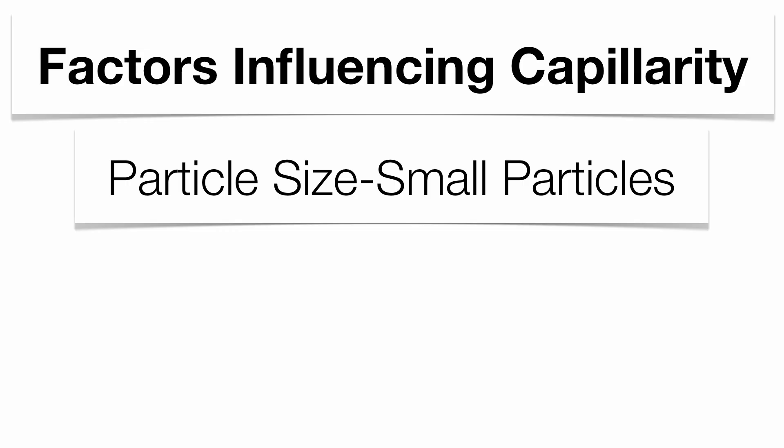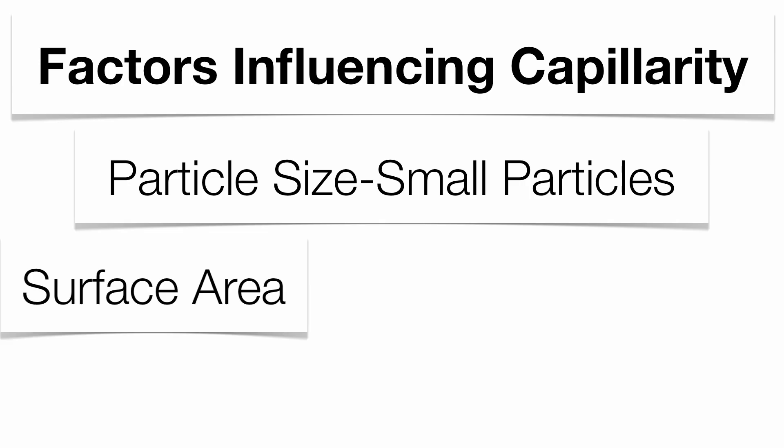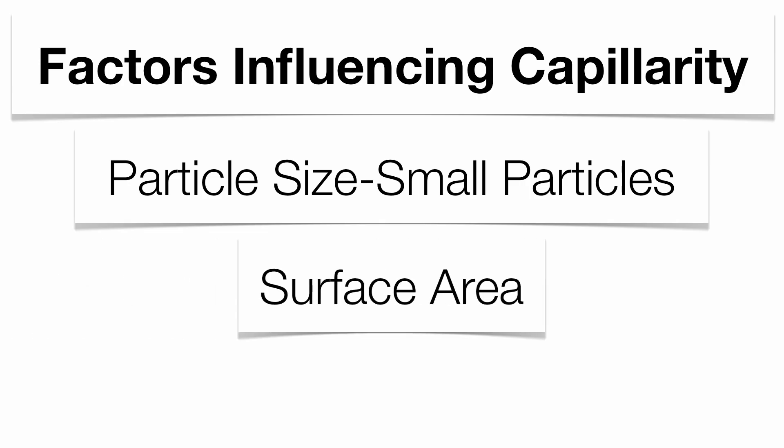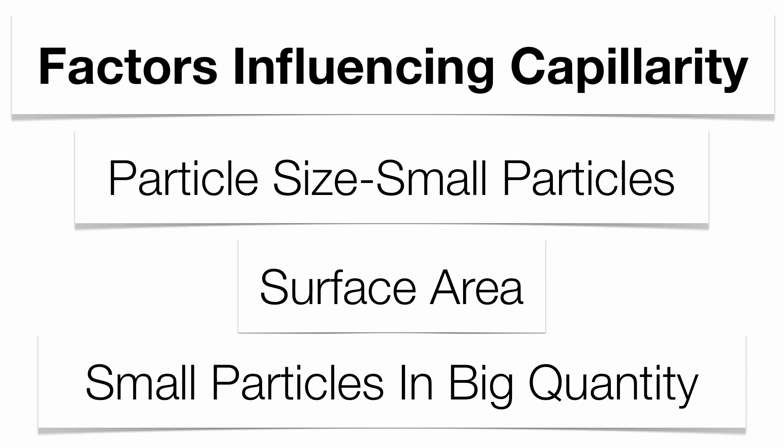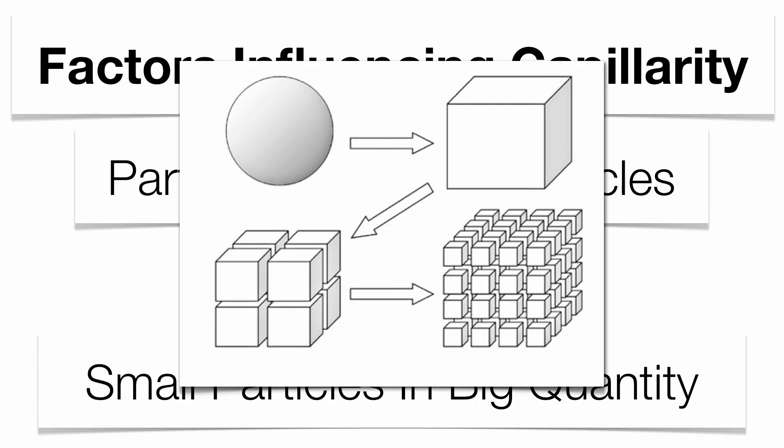The smaller the particle, the more attraction the water is going to have to it, because small particles in big quantity have a huge surface area. The more surface there is for water to cling on to, the more attraction it's going to have. You can see here as a spherical object changes into a cube, and that cube gets broken up into pieces, and those pieces get broken up further — the cube in the bottom right with all the little pieces has a much higher surface area. Collectively, there's a lot more surface for water to cling on to in the smaller pieces.